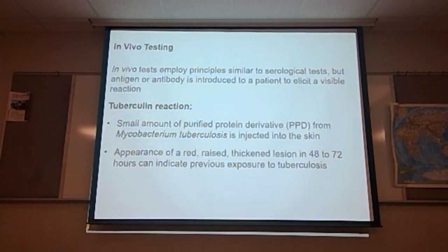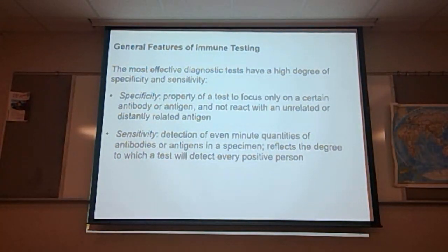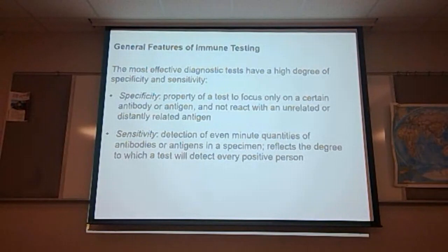The appearance of a red, raised, thickened lesion in 48 to 72 hours can indicate previous exposure to tuberculosis. The most effective diagnostic tests have a high degree of specificity and sensitivity. Specificity is the property of a test to focus only on a certain antigen or antibody and not react to unrelated antigens. Sensitivity detects even minute quantities of antibodies and antigens, reflecting the degree to which a test will detect every positive person.